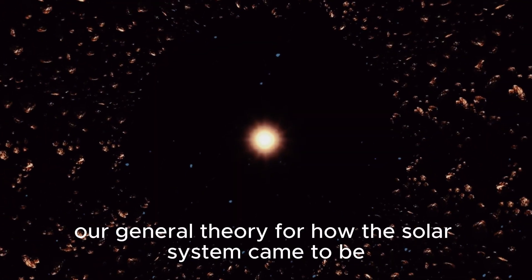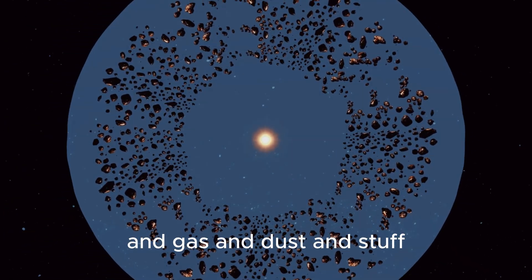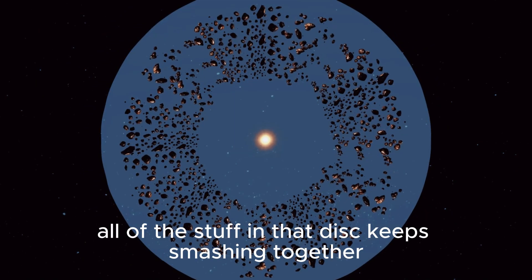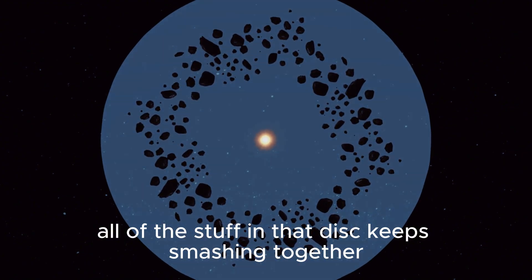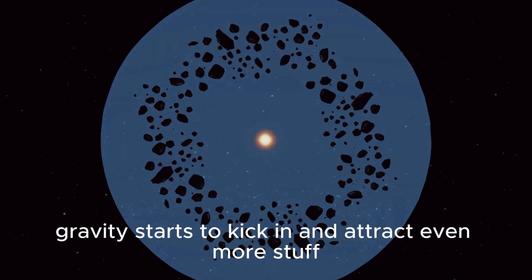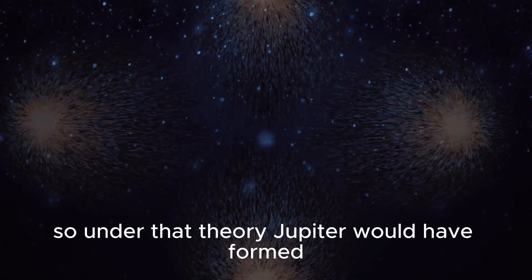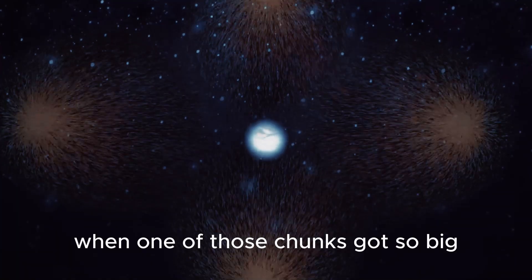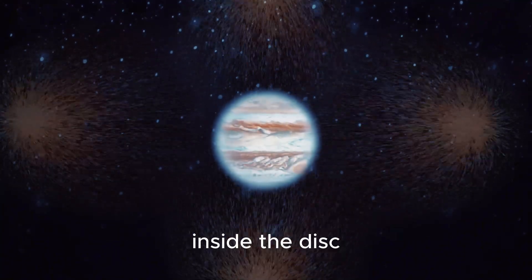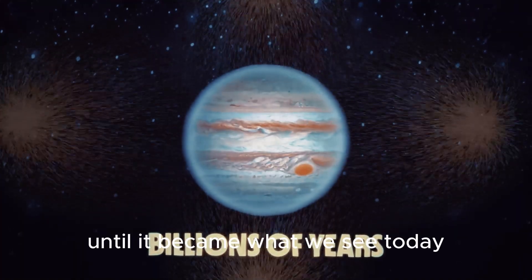Our general theory for how the solar system came to be starts with a big disk of rock and metal and gas and dust, all spinning around the newly formed sun. Over millions of years, all of the stuff in that disk keeps smashing together and forming into bigger chunks. As those chunks get even bigger, gravity starts to kick in and attract even more stuff. So under that theory, Jupiter would have formed when one of those chunks got so big that its gravity started capturing massive amounts of gas that were swirling around inside the disk, and just kept doing that for billions of years until it became what we see today.